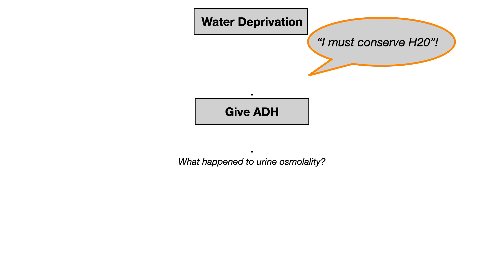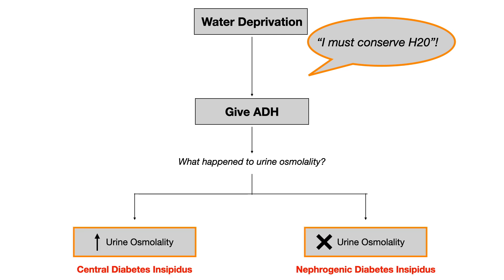When you give them ADH: if their urine osmolality then increases, that means there was no ADH available, but once you gave it to them, the water was reabsorbed — which concentrated the urine and caused the urine osmolality to increase. That's central DI, because their brain could not make ADH, but when you gave them what their brain couldn't make, the body carried out its normal function. The kidney had no problem responding to ADH.